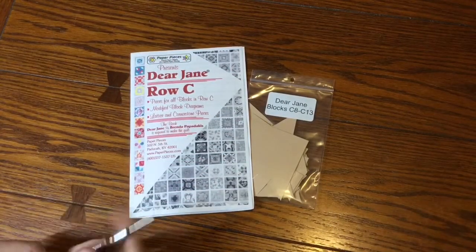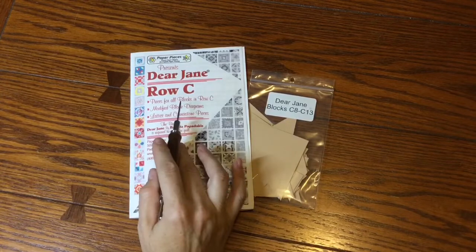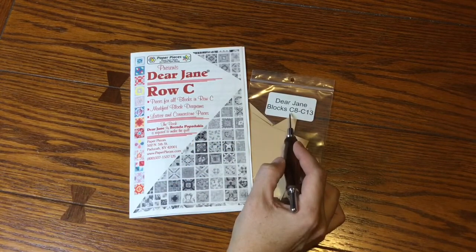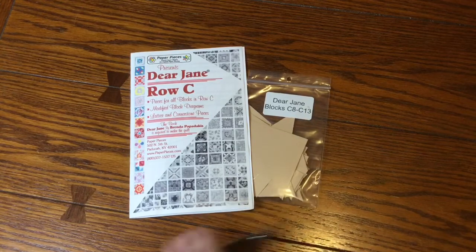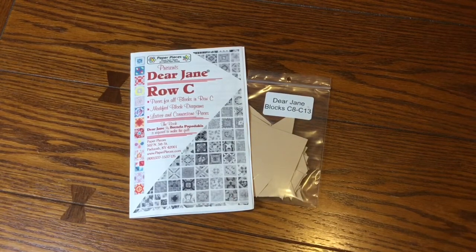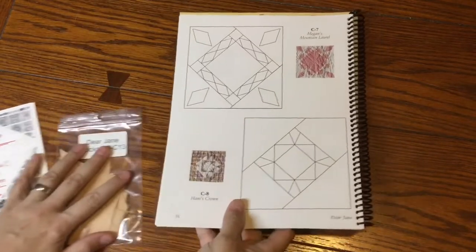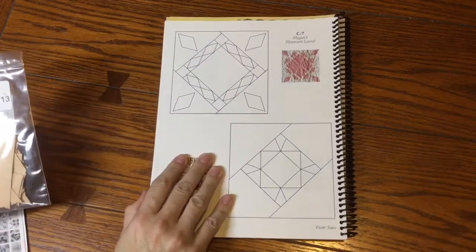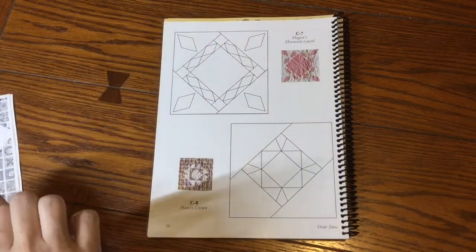Today we are going to sort the second bag of the Rose C English paper piecing pack. It's going to cover blocks C8 through C13. So I'm going to get my book and set this, and we're going to dump these pieces out.